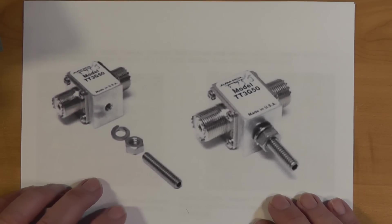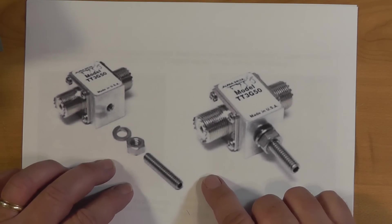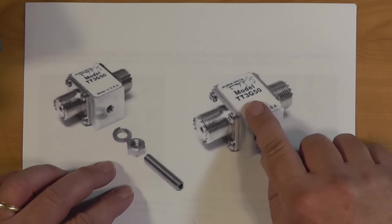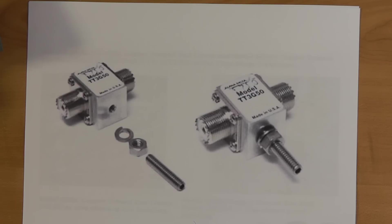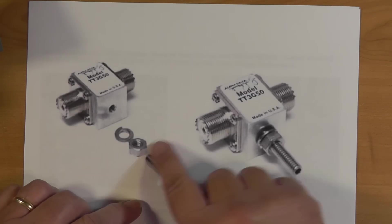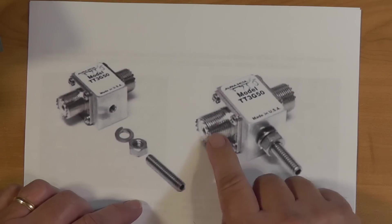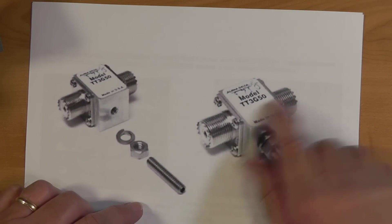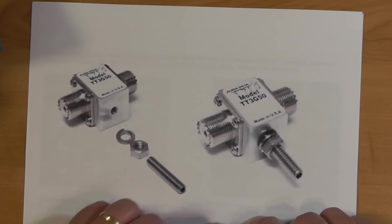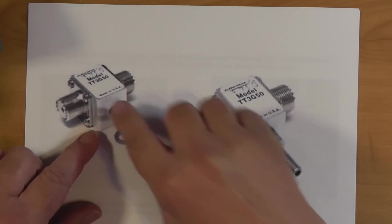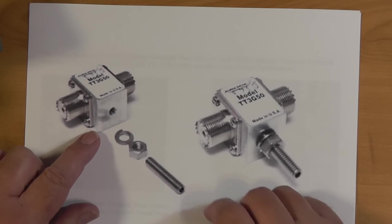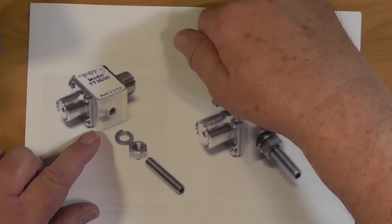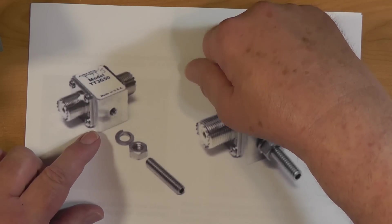First let's look at regular lightning protectors. This is a picture from DX Engineering of the TT3G50, which is the standard lightning arrestor that you might get for your coax cable. They've got two coax connectors here, these are both SO239s. This is a solid block of metal with cavities drilled out for where things go. The actual lightning, the thing that arrests the lightning goes down inside.